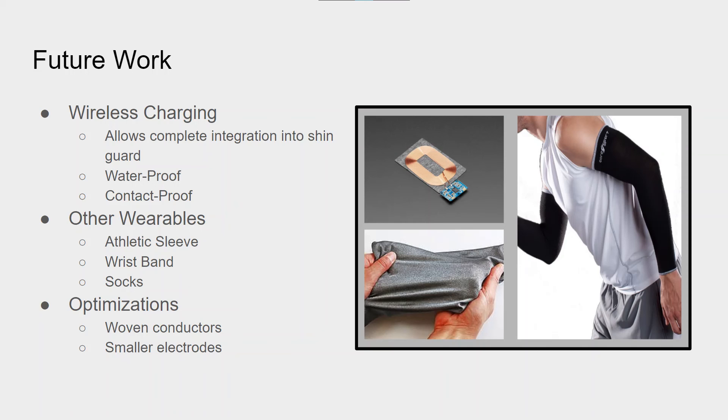The other ideas we've had are other wearables such as an athletic sleeve, or different types of implementations such as woven conductors or textile electrodes. The idea behind the athletic sleeve is that this wearable form factor is a lot more universal. This can be applied to both the arm or the leg and offer both segment and joint data.